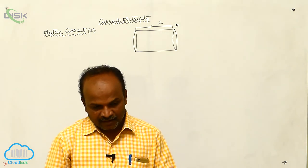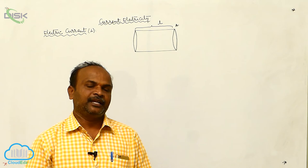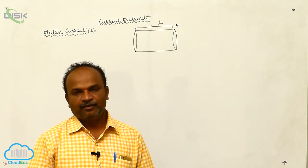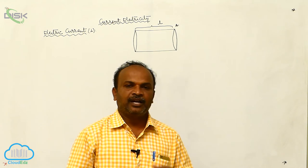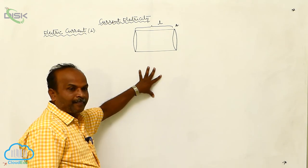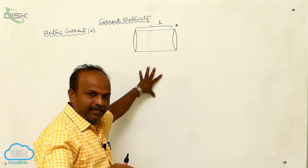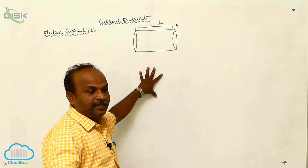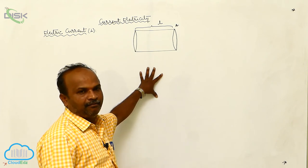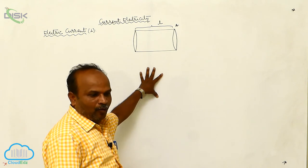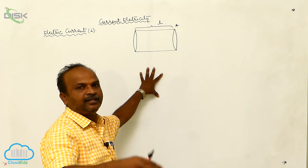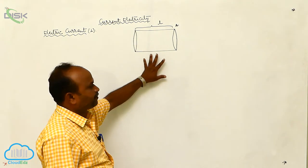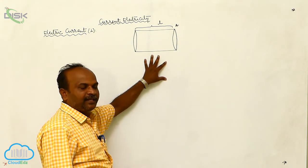The substance which contains a greater number of free electrons is called a conductor. The substance which does not contain free electrons is called an insulator. In a conductor, there are metal ions, and around those metal ions there are free electrons. The bond present among the molecules is the metallic bond. Due to the metallic bond, the electrons that participate in it are treated as free electrons, and because of those free electrons, current flow takes place.